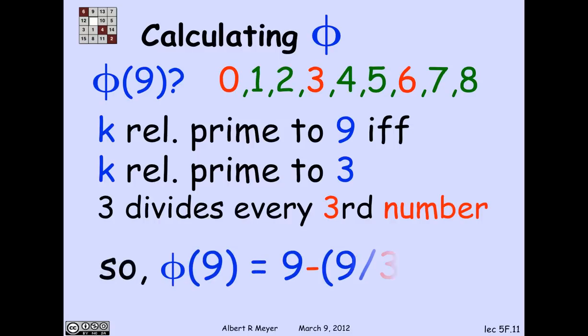So phi of 9 is simply the set of all the numbers minus 1 third of 9, which is the bad ones, namely 6.